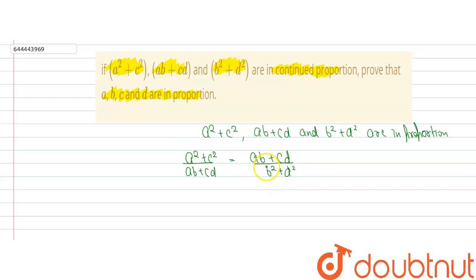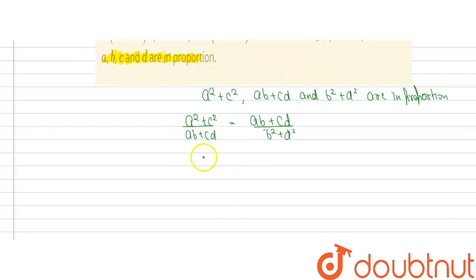Now we cross multiply and we will get a² plus c² into b² plus d² is equal to ab plus cd whole square.